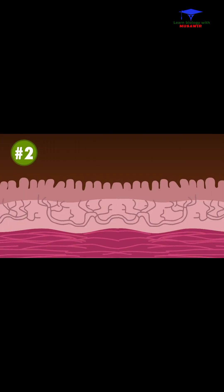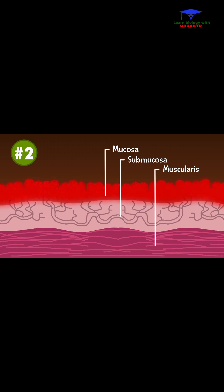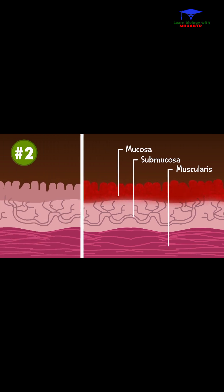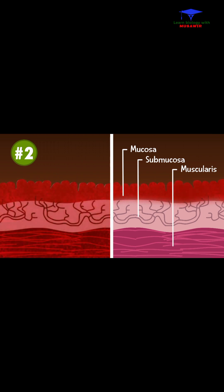Your intestine walls have many layers. In ulcerative colitis, the innermost lining of your colon is inflamed and damaged. With Crohn's, the inflammation can be throughout your intestine walls.